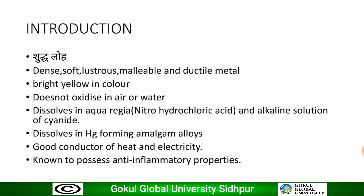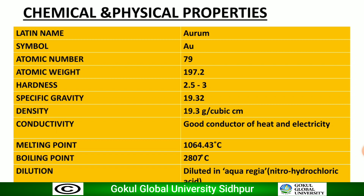Gold is used as medicine — some gold salts have anti-inflammatory properties and are used as pharmaceuticals in the treatment of arthritis and similar conditions. Gold-based injections have been explored to help reduce pain and swelling of rheumatoid arthritis and tuberculosis. The atomic weight is 197.2, hardness is 2.5 to 3, specific gravity 0.32, density 19.3 g/cm³, and it is a good conductor of heat and electricity. Melting point is 1064.43°C, boiling point 2807°C, and it is dissolved by aqua regia.